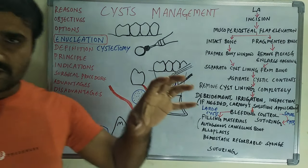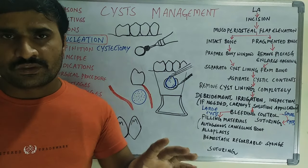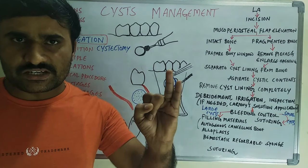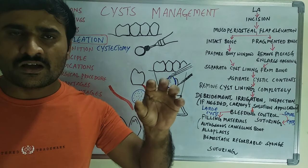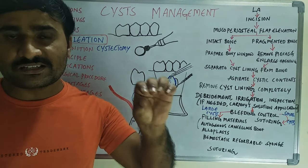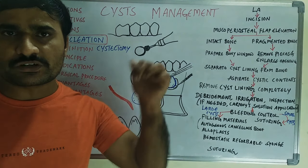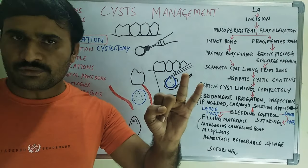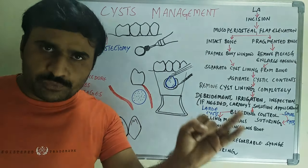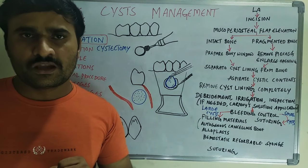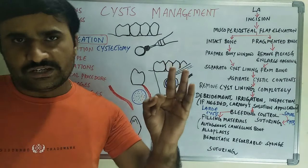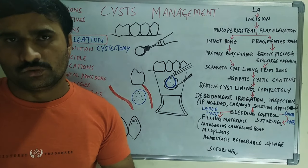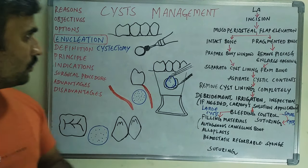The options available for cyst management are: first, enucleation; second, marsupialization. Enucleation is the most reasonable and popular technique, most commonly used for cyst management. In some cases, we first do marsupialization followed by enucleation. The third option is radical resection, which is complete removal and sectioning of the bone.